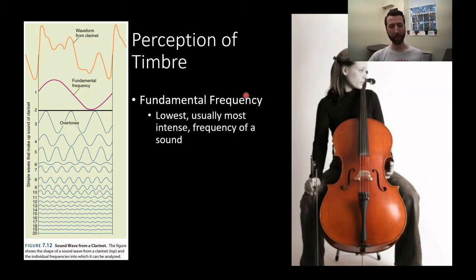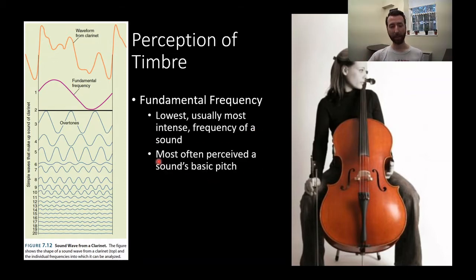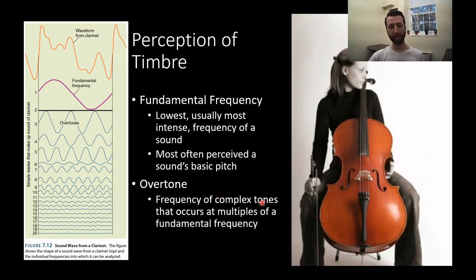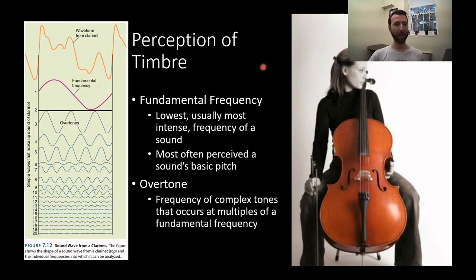Timbre is a combination of the fundamental frequency — the lowest, usually most intense frequency of a sound — perceived as the sound's basic pitch, which would be middle C in our example. Then there are combinations of overtones: frequencies of complex tones that occur at multiples of the fundamental frequency. The pattern of overtones changes based on what's making the tone. The unique combination of fundamental frequency and all these overtones produces the unique cello or clarinet waveform. That's why sounds sound different despite having the same pitch and loudness — it's that combination of complex multiplicative overtones in addition to the fundamental frequency.